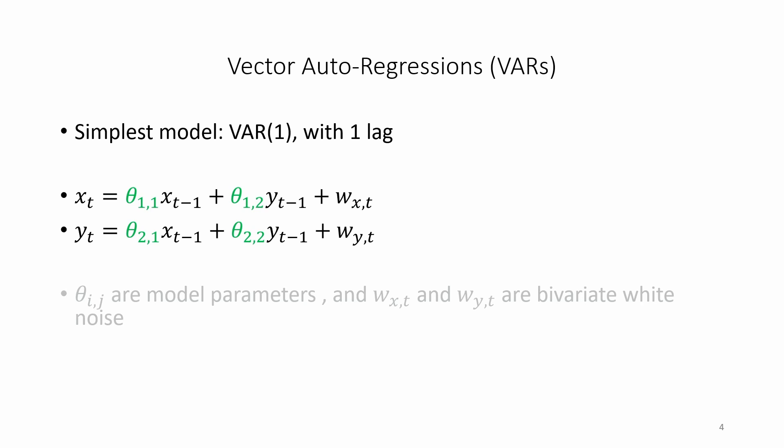This matrix of coefficients gives information on how lagged values of x and y affect current values. The w terms are the usual regression error terms that we assume are normally distributed white noise terms that are independent of each other.